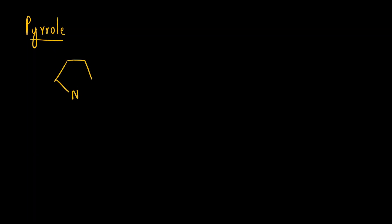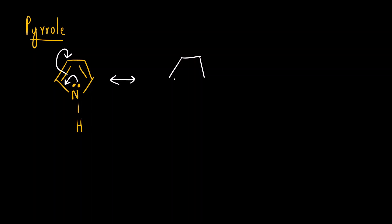Now let us see the resonance structure for pyrrole. Pyrrole is a five-membered ring. Here the electronics is slightly different — nitrogen is already forming three bonds, so the lone pair will now be involved in resonance. Instead of withdrawing electrons, nitrogen donates its lone pair like this, and the pi bond moves here. What we get is nitrogen with a pi bond, a lone pair or negative charge, and another pi bond. Since nitrogen is now forming four bonds, it gets a positive charge.